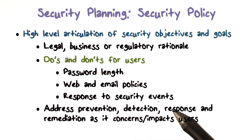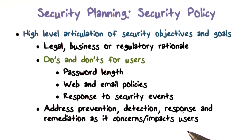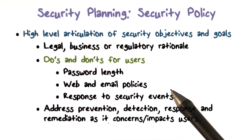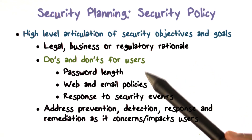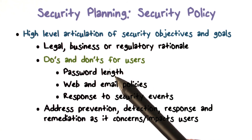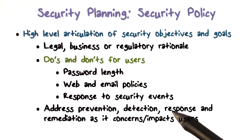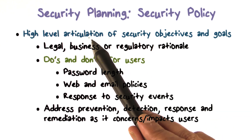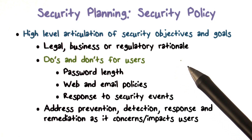Policy components may have to do with prevention, so bad things don't happen. They may have to do with detection — how you find out that there was a breach. It may address how we respond and how remediation occurs. Of course, it must address the concerns and impact that any of these things could have. The policy articulates why things need to be the way it says they should be, and if it doesn't address the concerns and needs and impact it might have on users, the policy may not be well accepted.